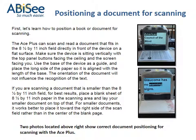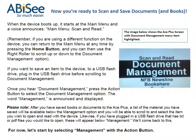Positioning a document for scanning. The Ace Plus can scan and read a document that fits in the 8½ by 11 inch field directly in front of the device on a flat surface. Make sure the device is sitting vertically with the top panel buttons facing the ceiling and the screen facing you. Use the base of the device as a guide and place the long side of the paper aligned with the length of the base. If you are scanning a document smaller than the 8½ by 11 inch field, for best results, place a blank sheet of 8½ by 11 inch paper in the scanning area and lay your smaller document on top of that, placing it toward the right side of the scan field rather than in the center.